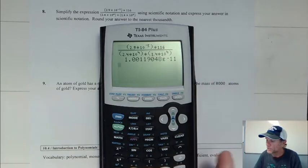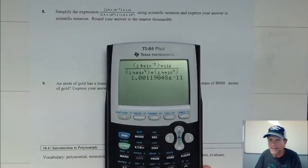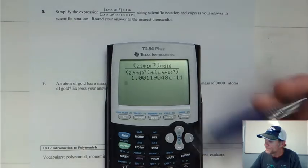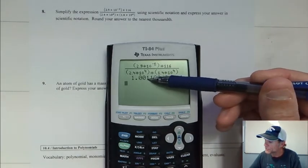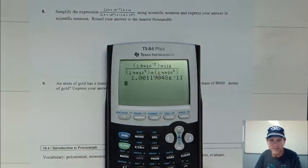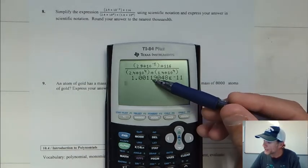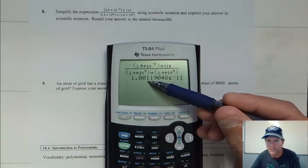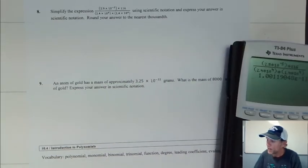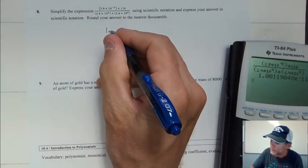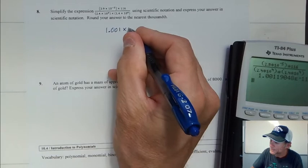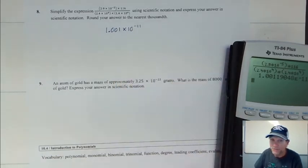So it does say round your answer to the nearest thousandths. If we look at this, tenths, hundredths, thousandths, so we're going to round to that spot, and we look over and it's a 1, so we're going to keep it at 1. So we'll have 1.001 times 10 to the negative 11th.